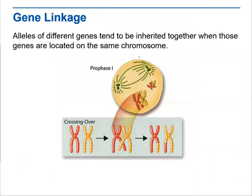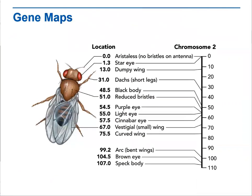Regarding how we connect the genes: alleles of different genes tend to be inherited together when those genes are located on the same chromosome — that's gene linkage. When we talk about gene mapping, we use the fruit fly as an example, where you can identify the location and the different chromosomes for each gene.